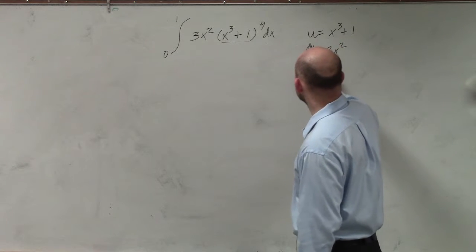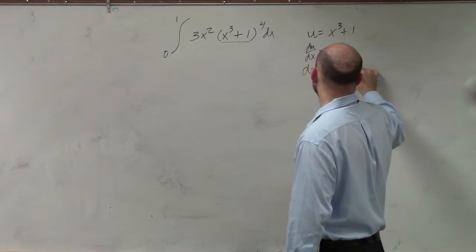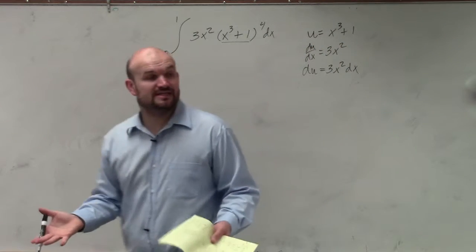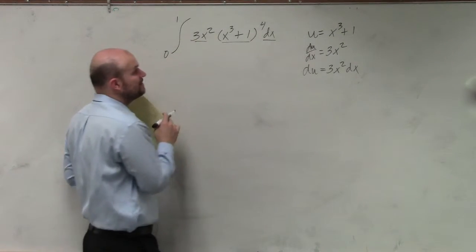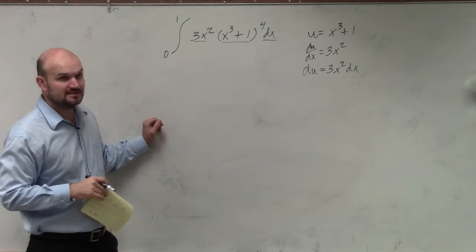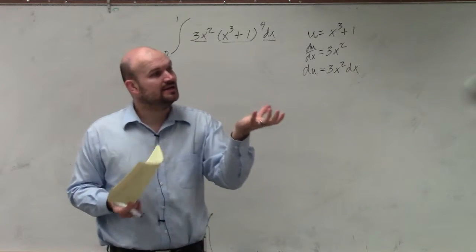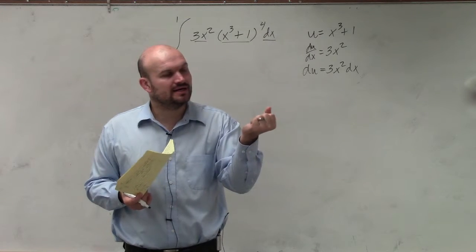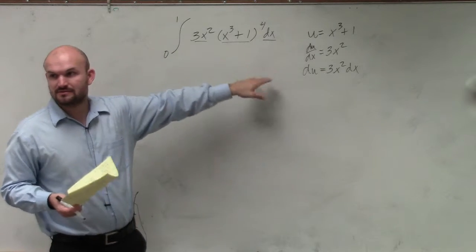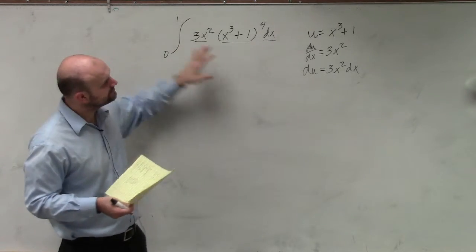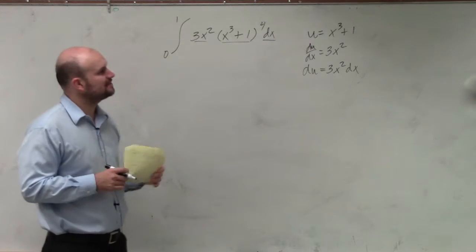Multiply dx on both sides, so du is equal to 3x squared dx. Now usually these are not going to line up perfectly, but here you can see that we do have du — we have 3x squared and dx. And if there was any other constant or difference in our multiples, we know that we could take that number out and multiply it out. We'll do more examples of those in a second.